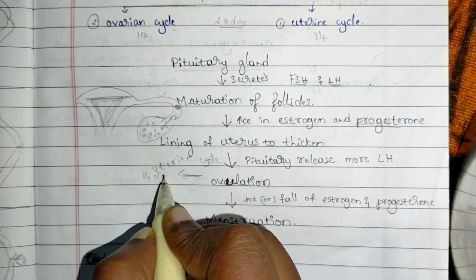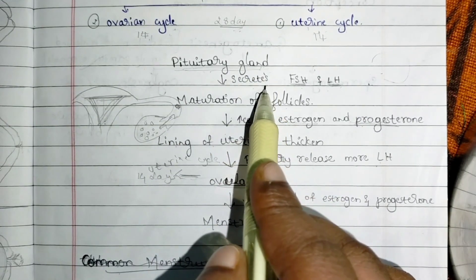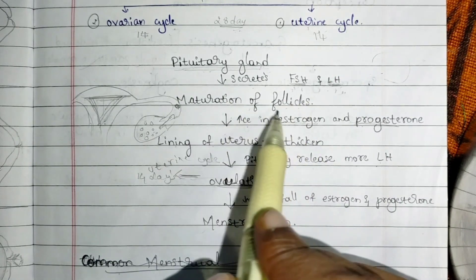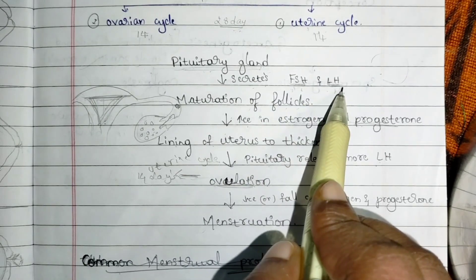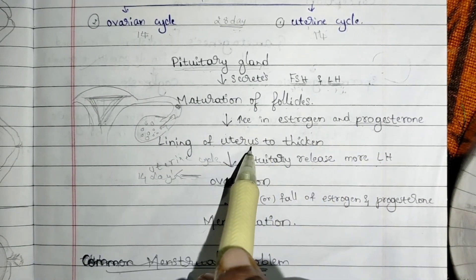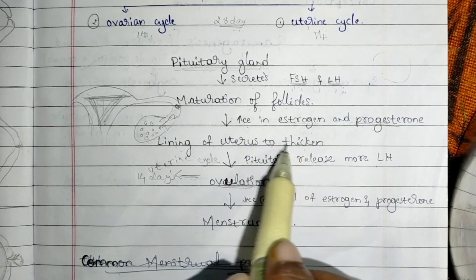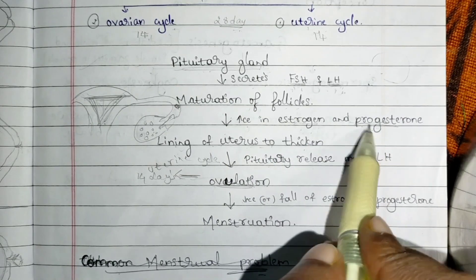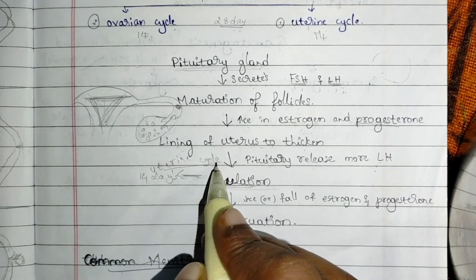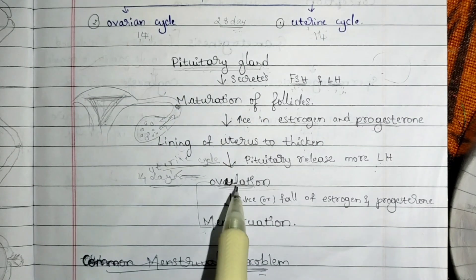This uterine cycle occurs within 14 days; ovulation occurs on the 14th day. To summarize: FSH and LH hormones are responsible for maturation of follicles. Estrogen and progesterone help in thickening the lining of the uterus. LH hormone is used in ovulation. This completes the uterine cycle in the first 14 days. The next 14 days constitute the ovarian cycle.